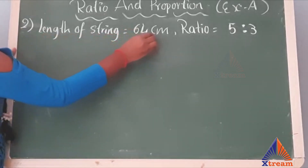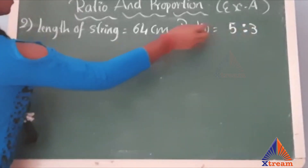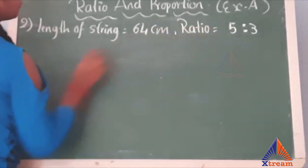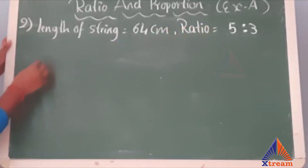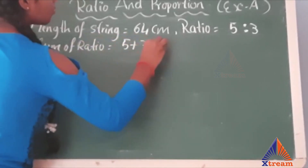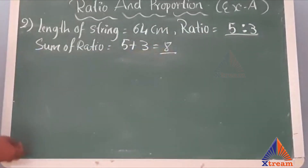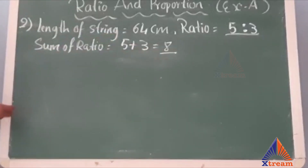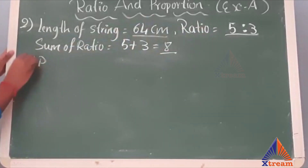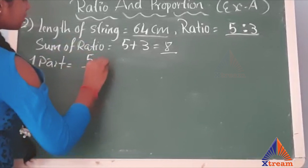This is our second question. The question states the length of a string is 64 cm, and they are asking us to divide the 64 cm string into 2 parts in the ratio 5 is to 3. Before dividing, you need to calculate the sum of the ratio. The sum of the ratio is 5 plus 3, which equals 8. Now, our first part is equal to 5 by 8 multiplied by 64.